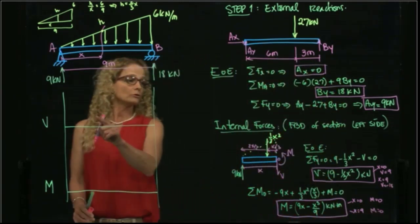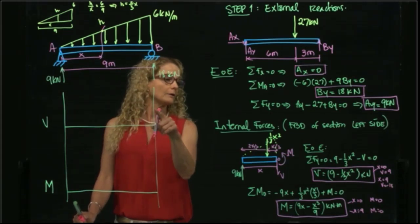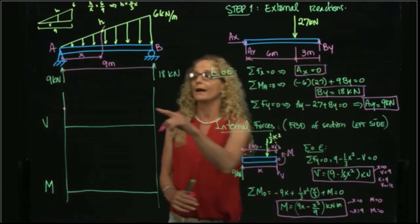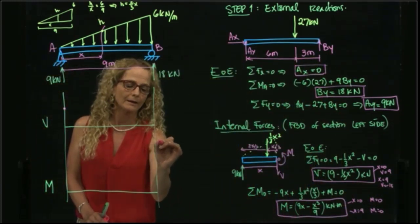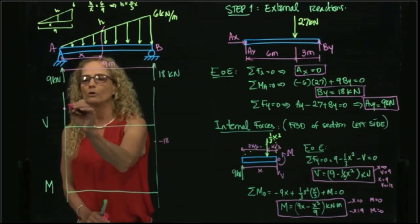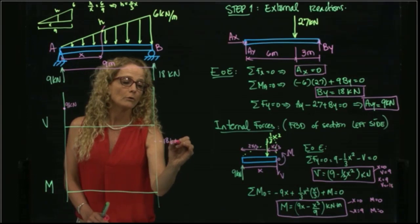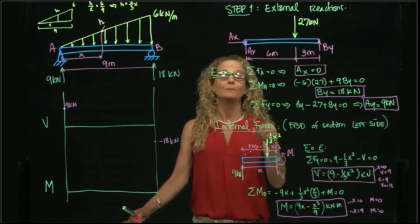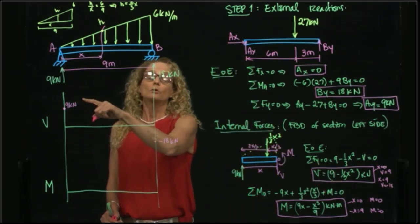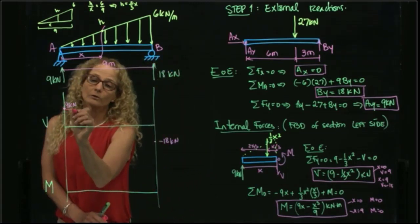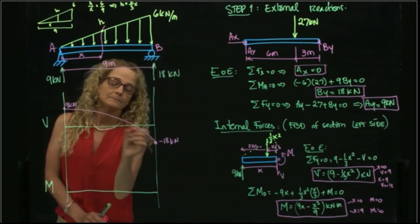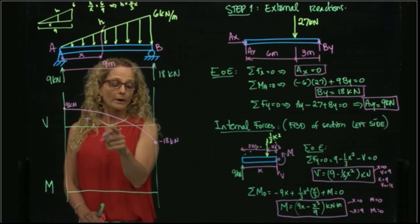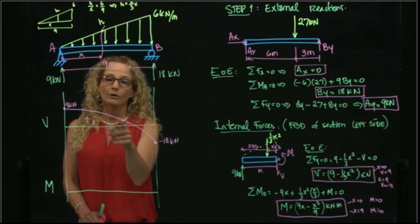So when we try to draw the shear, we have that for X equals 0, I start with 9. When I go to X equals 9, I end up with negative 18. So I start with 9 and I go to negative 18. How do I go from 9 to negative 18 with a quadratic curve? Negative. So it means that it's a quadratic curve, concave down. So I go with something like that. Where this is positive and this is negative. I actually could find where that point cuts the axis.